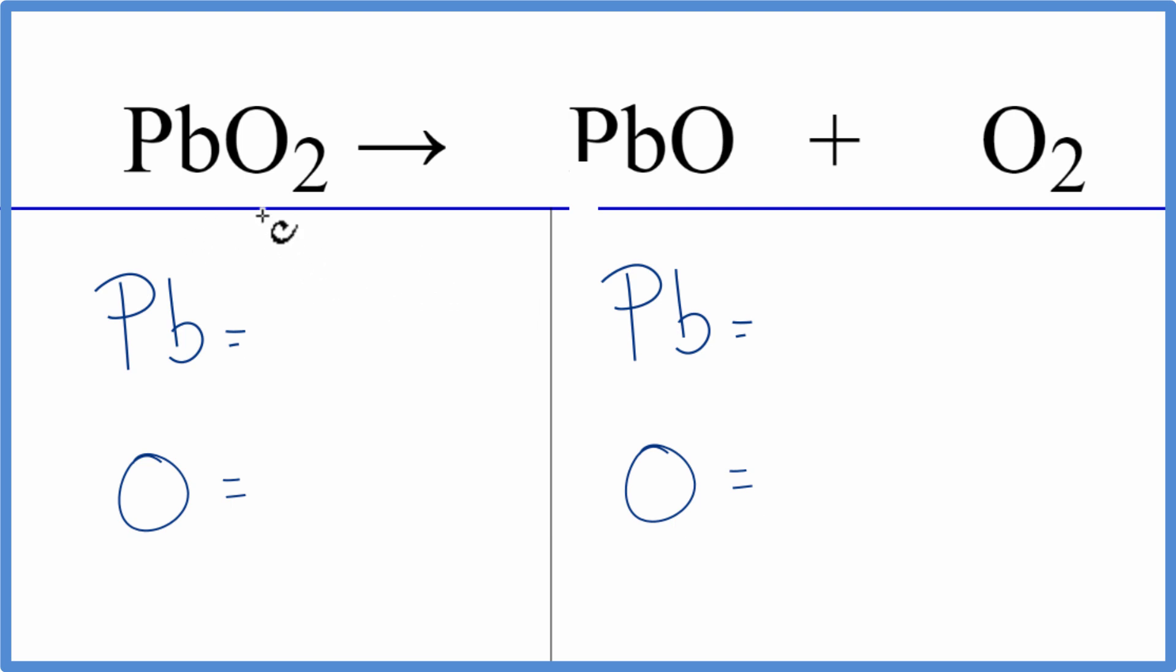We have on the reactant side one lead and two oxygens. On the product side we have one lead and then one oxygen, but don't forget we have these two oxygens out here. One plus two gives us three.